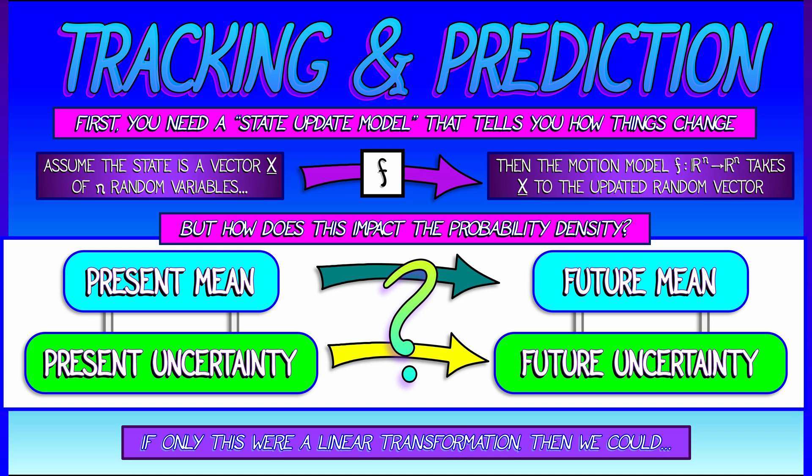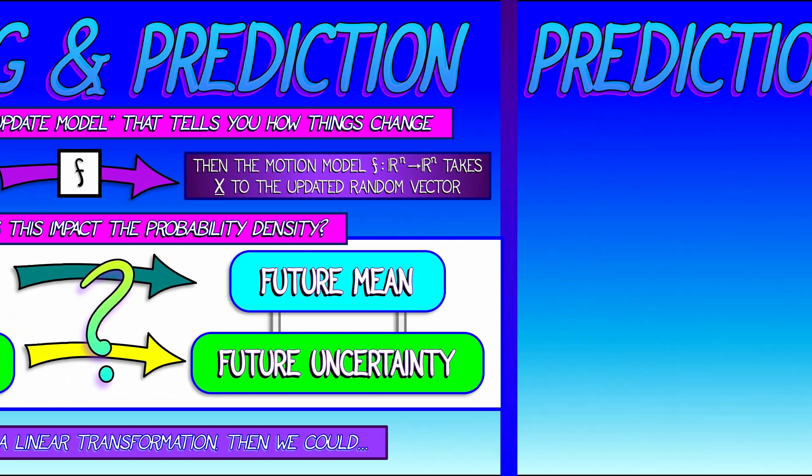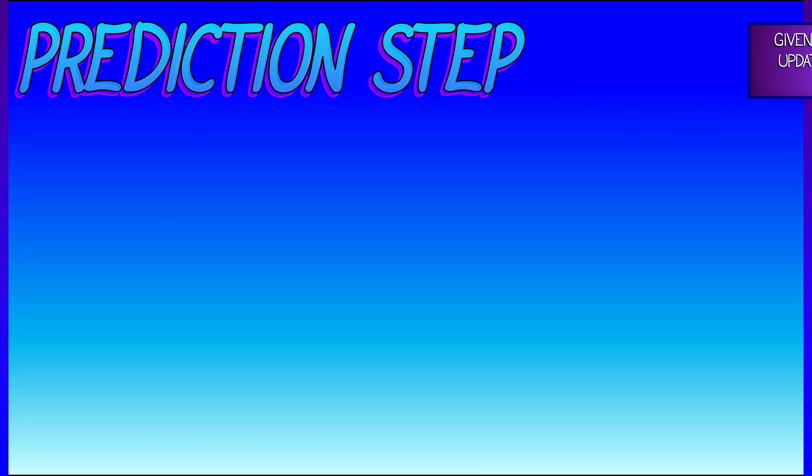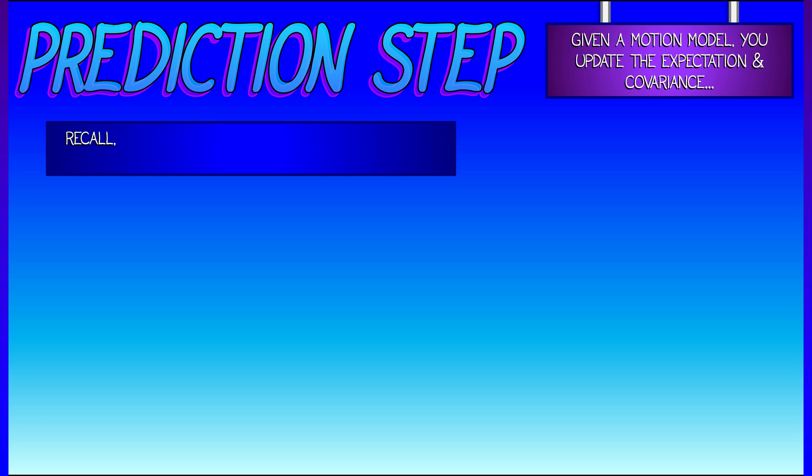Well, if f were a linear transformation, then we know how expectation and covariance change. So let's drop back to our understanding of what happens in the context of a linear transformation, and then think about what we do if it's nonlinear.